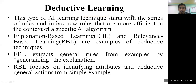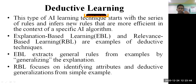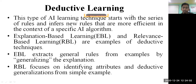Deductive-based learning starts with a series of rules and infers new rules that are most efficient in the context of a specific AI algorithm. In inductive learning we talk about what input and output data is given, and according to that some rules are generated. In deductive learning, it starts with a series of rules and infers new rules — new rules will be automatically framed by an intelligent machine. Deductive learning is classified into two types: explanation-based learning and relevance-based learning.